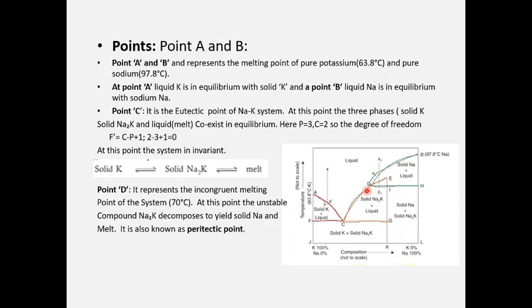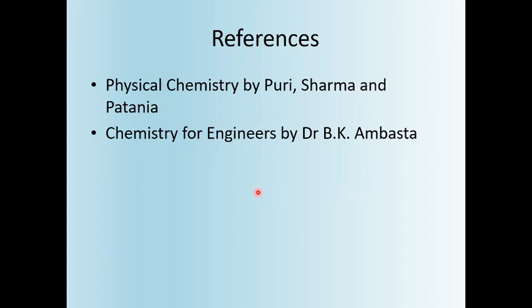Point D represents the incongruent melting point of the system at 70°C. At this point, the unstable compound sodium potassium decomposes to solid sodium and the melt, and this is known as the peritectic point. This concludes the sodium-potassium system. References: Principles of Physical Chemistry by Puri, Sharma, and Pathania, and Chemistry for Engineers by Dr. B.K. Ambadas. Thank you, students.